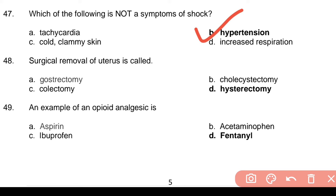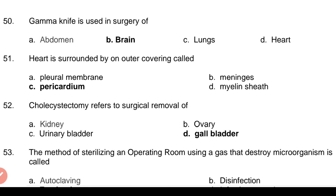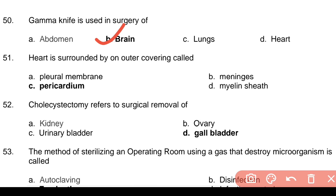Question 47: Which of the following is not a symptom of shock? Answer: b. Hypertension. Question 48: Surgical removal of the uterus is called — Answer: d. Hysterectomy. Question 49: An example of an opioid analgesic — Answer: d. Fentanyl. Question 50: Gamma knife is used in surgery of — Answer: b. Brain. Question 51: Heart is surrounded by an outer covering called — Answer: c. Pericardium.